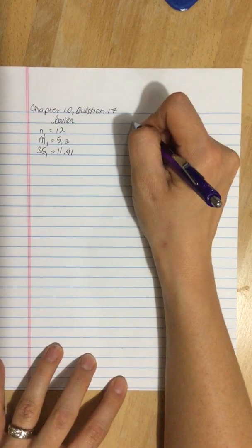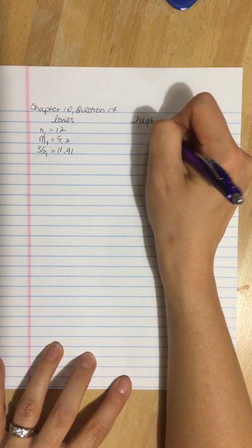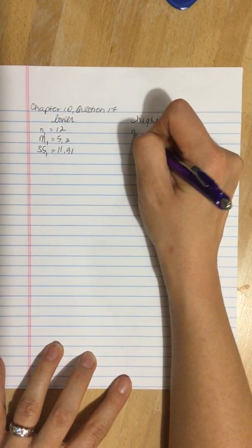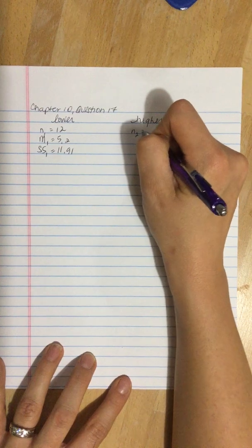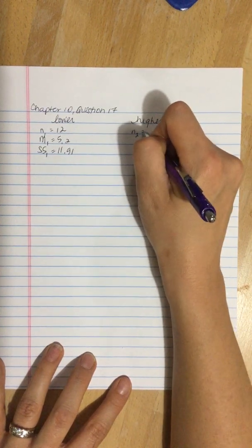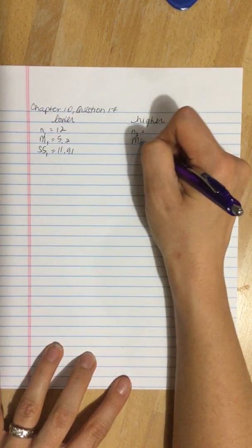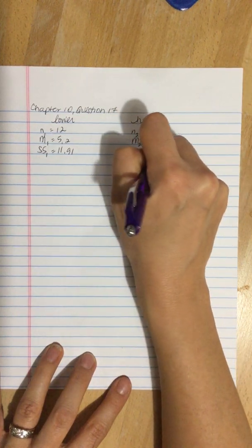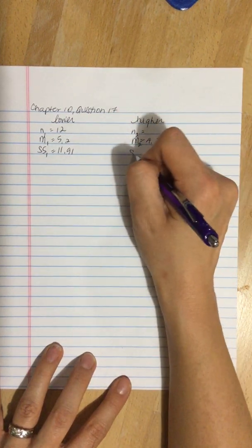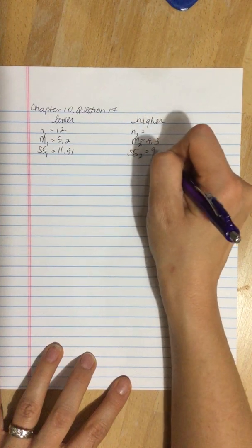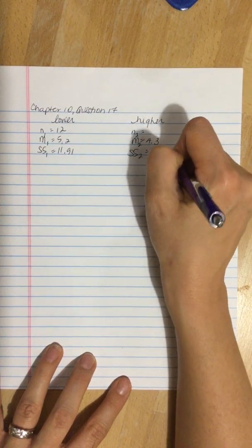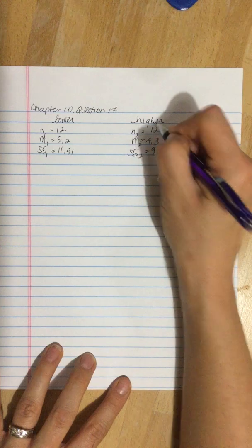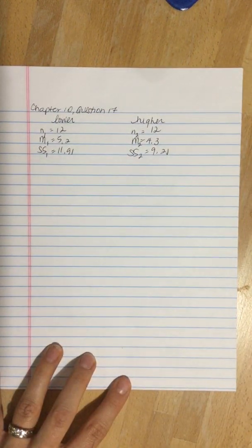Compared to an average for the higher class of M=4.3 with a sum of squares equal to 9.21 for the n=12 upper class participants.